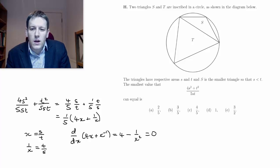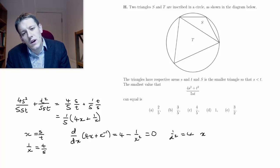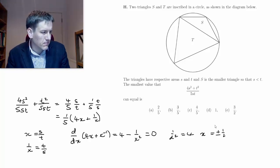So 1 over x squared is equal to 4. So I've got here that x must be 1 half, plus or minus 1 half here, just purely algebraically.